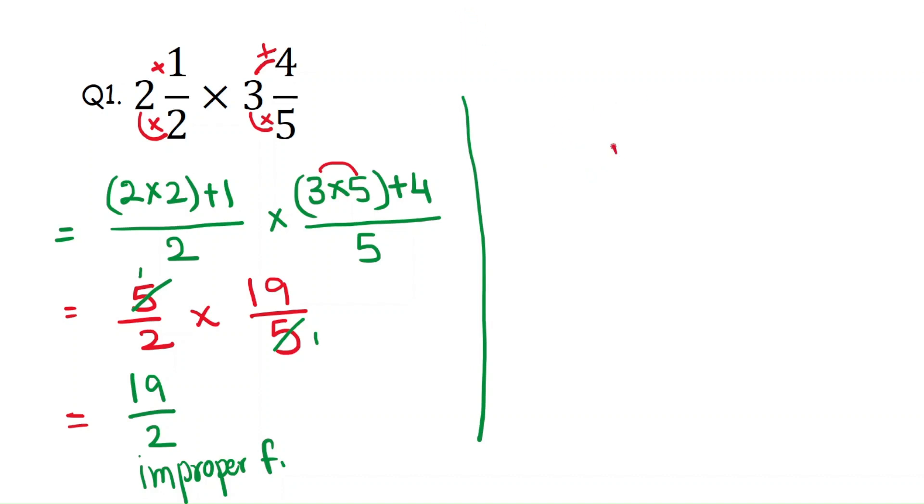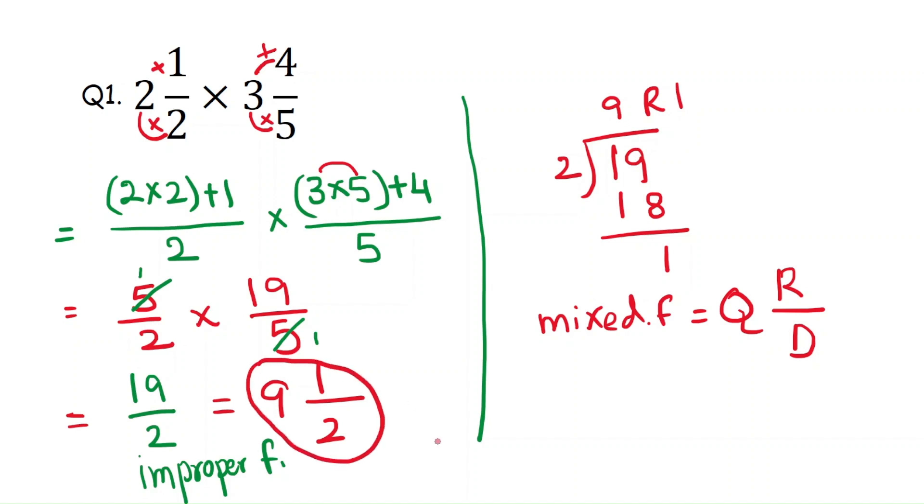Divide 19 with 2. That will be 2 times 9 is 18 and the remainder is 1. Here is the remainder. How you can write: the remainder by divisor. That is here 2 is the divisor. So that will be quotient is 9 and the remainder is 1 and the divisor is 2. 9 and 1 by 2 is the answer.